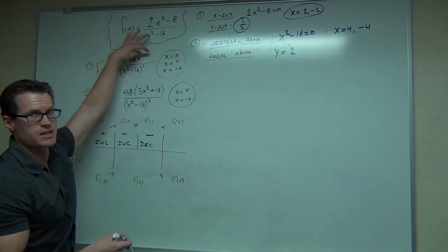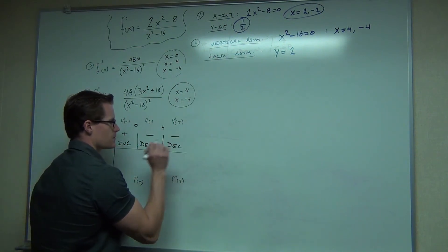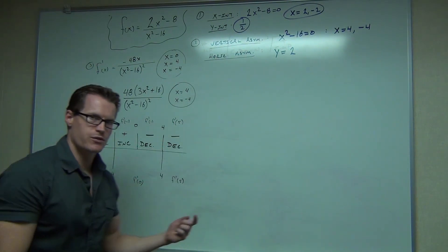5. Negative times a positive is a negative over a positive. It's still a negative. Decreasing. Second derivative is telling us some more things.